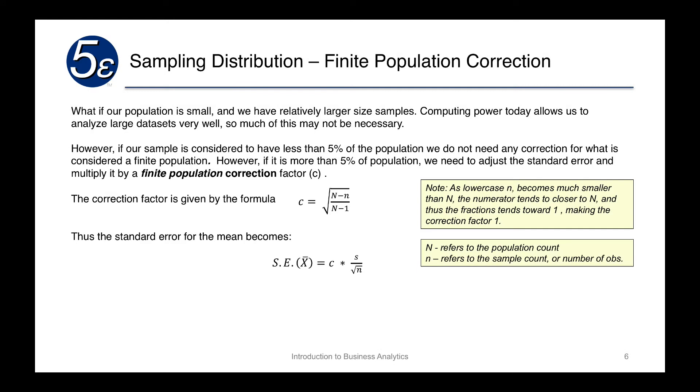Now, what if our population is small, something that's very, very small? Say, for example, the population that has a very rare disease. There isn't a lot of people who have that. But we have a very large sample size. Well, there are a number of things that we can do with that. And in some cases, we may say that the population is small. But in reality, we can gather much more data much more easily. So our computing power today allows us to analyze larger data sets. So much of this may not be necessary for some of the analysis.